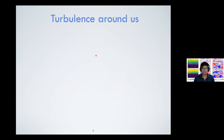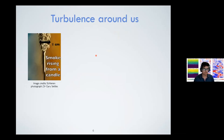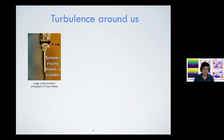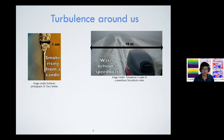Where do we see turbulence around us? The first example is smoke rising from a candle. As smoke rises, for the initial part when it is rising slowly, it's actually not turbulent — this part is laminar. Whereas when it has risen up to quite some height and gains speed, it becomes turbulent. This smoke from the candle is around one centimeter wide, so that's the L of our Reynolds number — one centimeter is roughly the width of your pencil.